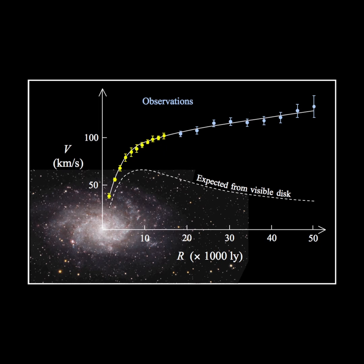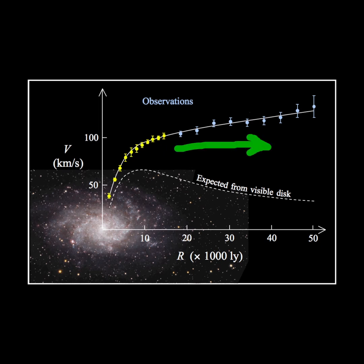Orbiting stars do not seem to slow down, but stay moving fast. In fact, they maintain their speed far out, even beyond the galactic edges. They are moving far too fast for the observable matter to hold onto them, and yet their orbits are stable.